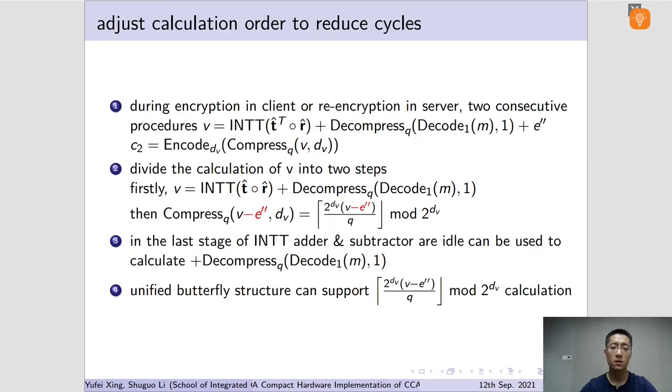Several procedures can be rearranged and merged to save cycles potentially. For example, the addition with e' in calculation of v can be deferred into the adjacent calculation of c2. In such a way, both calculations can be supported by the unified butterfly structure. It should be noted that the sign of each element in e' should be negative, which is easy as we can simply negate the sign of each bit in constructing centered binomial distributed samples.